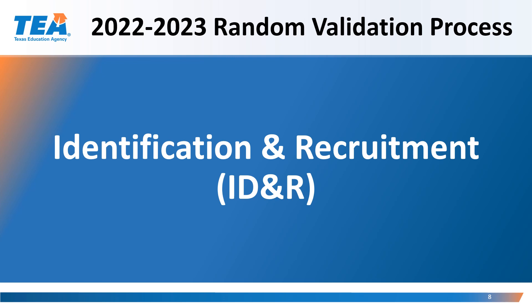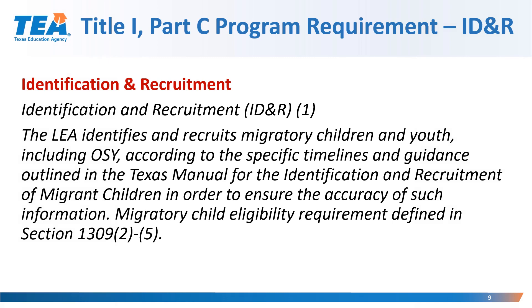Identification and Recruitment, IDNR. The LEA identifies and recruits migratory children and youth, including out-of-school youth, according to the specific timelines and guidance outlined in the Texas Manual for Identification and Recruitment of Migratory Children, in order to ensure the accuracy of such information. Migratory Children eligibility requirements are defined in Section 1309-2-5 of ESSA.